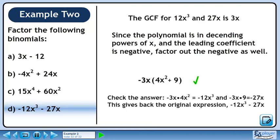Check the answer. Minus 3x times 4x squared is minus 12x cubed, and minus 3x times 9 is minus 27x. This gives back the original expression, minus 12x cubed minus 27x.